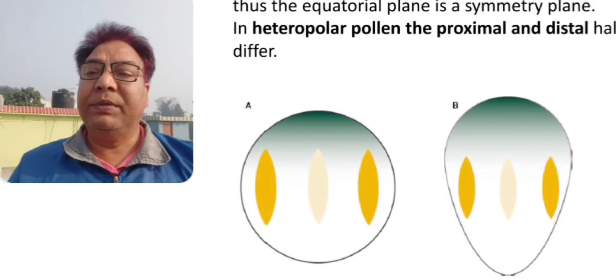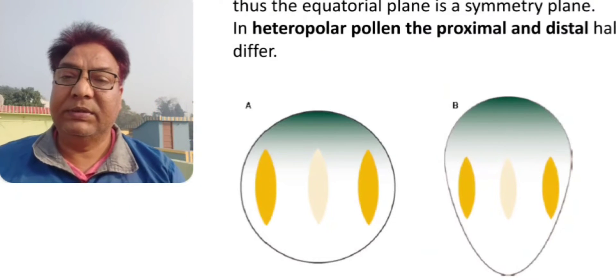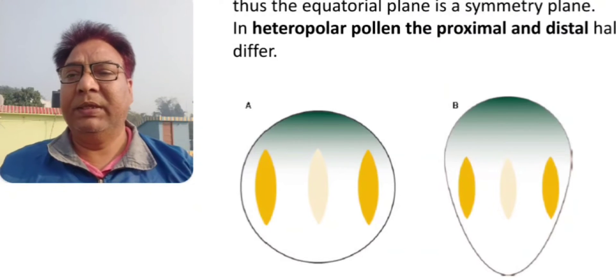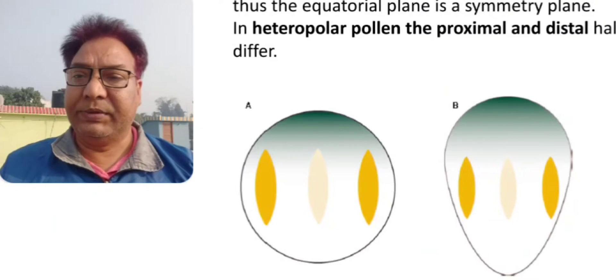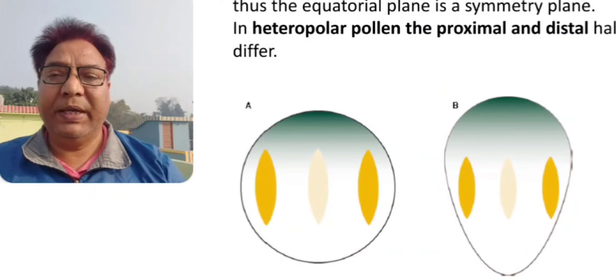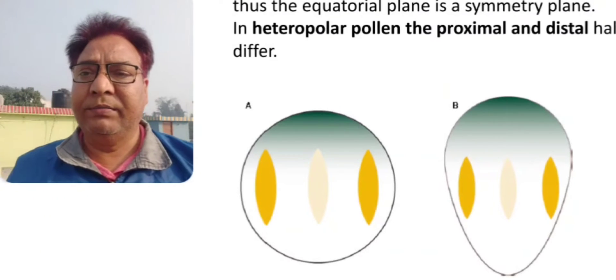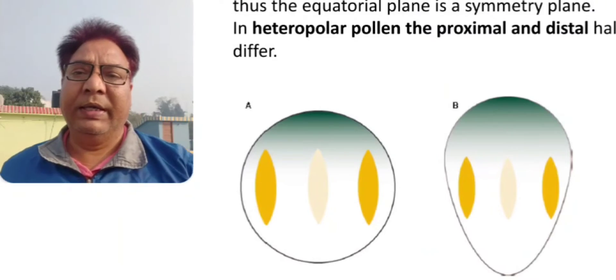Heteropolar spores will have zero horizontal plane of division because the poles are different. When you cut in the middle, you get unequal halves. There is no horizontal plane of division. That is what heteropolar spore is about.